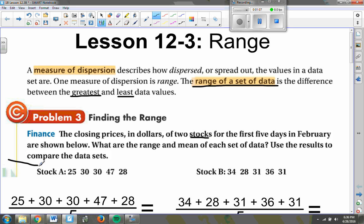So we have stock A, and its five-day ending dollar amounts are 25, 30, 30, 47, and then back down to 28. So if I want to find the mean dollar amount for that stock at the end of these five days,